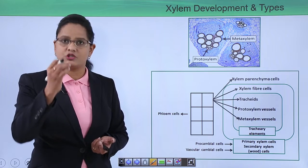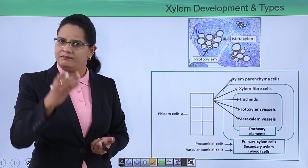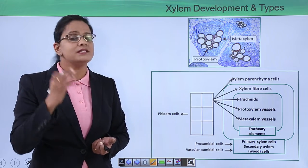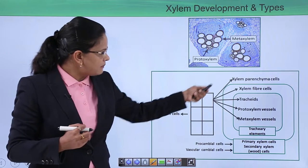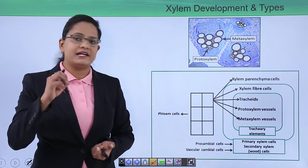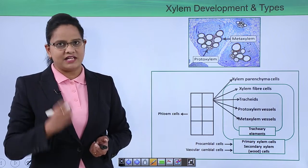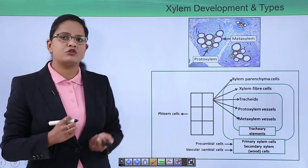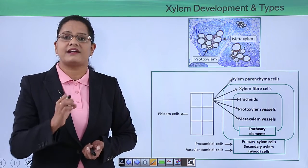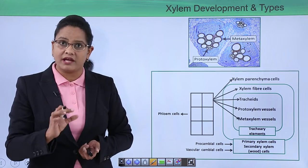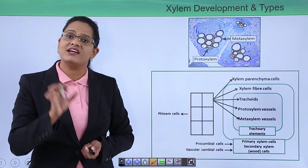Proto xylem means young xylem and meta xylem means older xylem. All four cell types develop from pro cambium cells, which are meristematic cells. Phloem cells also develop from these meristematic cells. The vessels and tracheids in combination are known as tracheary elements — vessels are also called trachea, and both elements together are called tracheary elements.